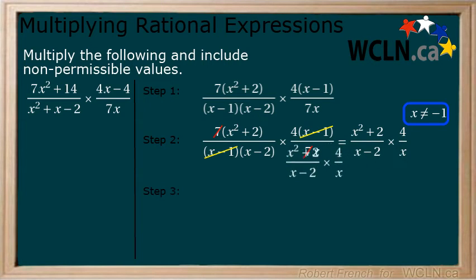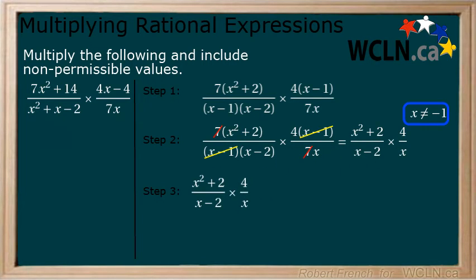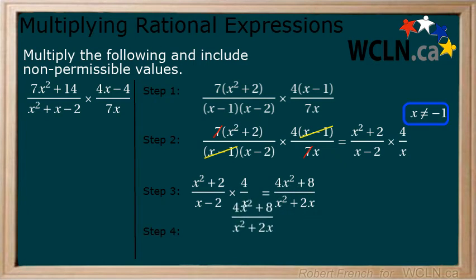Step 3: Multiply. Now we multiply the numerators and denominators together to get 4x squared plus 8 over x squared plus 2x. Step 4: Include any non-permissible values with your answer.